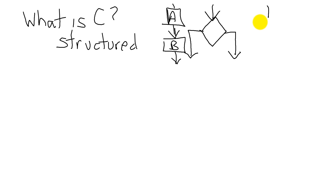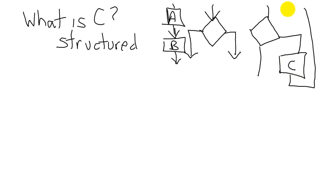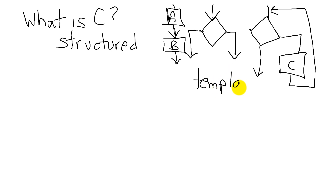The third is an iterative template. It has a decision, but if the decision is true, then we'll perform some function — the idea is we will perform it over and over again until it matches. So these are the three basic templates of C programming, connected together in a very simple way to build our software.